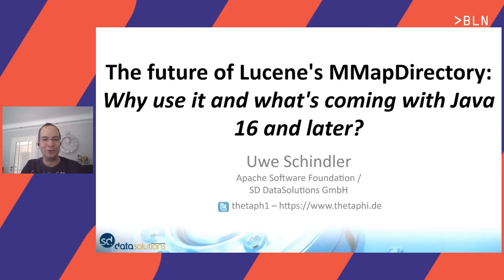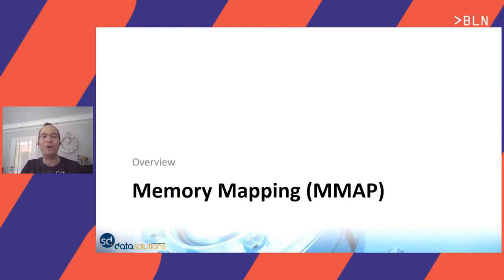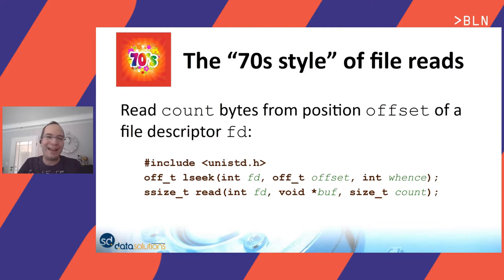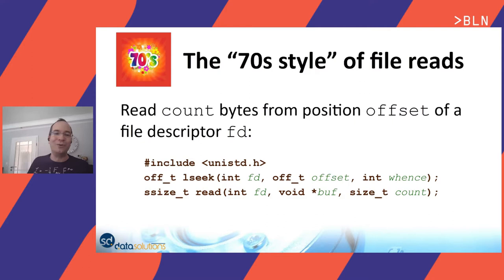So the first part is now about memory mapping. And before starting with that, I will have something like a short history about how you're reading from files in standard C code. As you see here, we already have some C code, not Java code this time. And this shows what I call it always the 60s style of file reads - how you would read from a file.